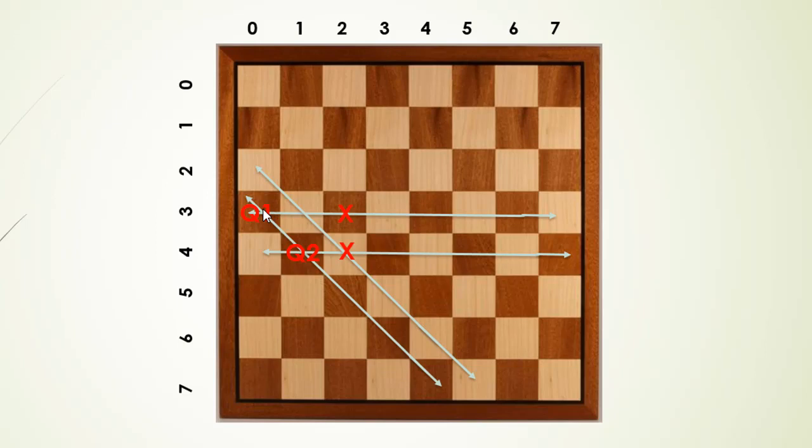In other words, we will generate another row until available row is found. Once found, we place the queen there. And once we have all 8 rows filled, we know that we have all 8 queens placed on the board.